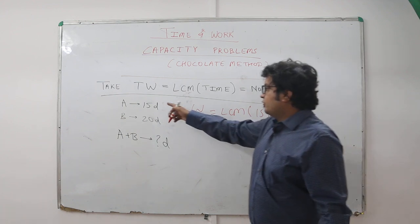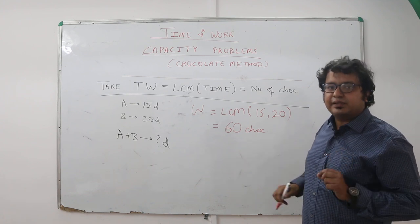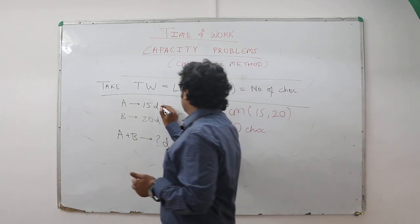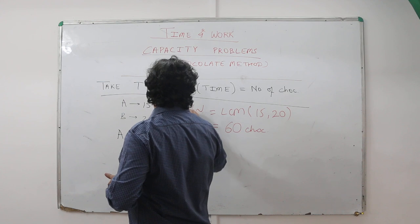Next step: find individual work. Now you don't need to take fractions - that's the point. 15 days A eats 60 chocolates, then per day how many chocolates will they eat? It's very simple: 60 by 15. So number of chocolates that A eats per day comes as 4 chocolates per day.